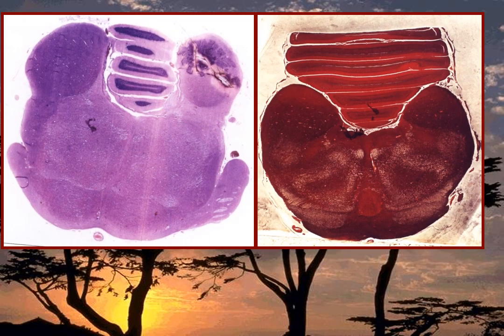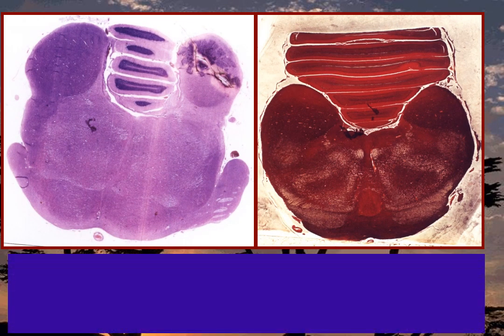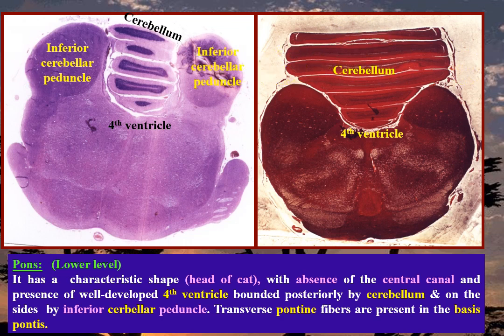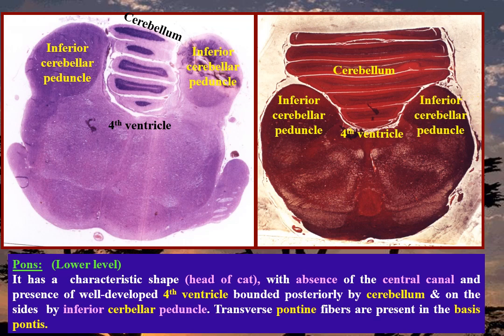Pons, inferior level — it has a characteristic shape like the head of a cat, with absence of the central canal and the presence of a well-developed fourth ventricle, bounded posteriorly by the cerebellum and on the sides by the inferior cerebellar peduncle. Transverse pontine fibers are present in the basis pontis.